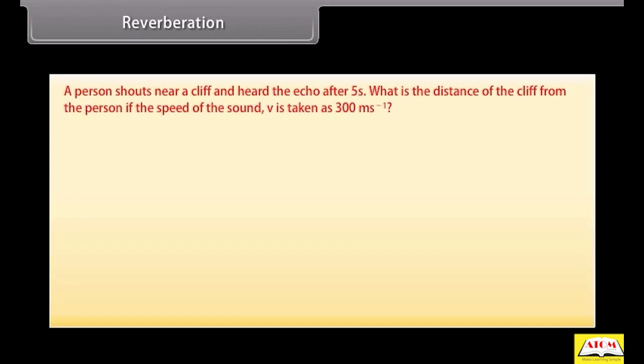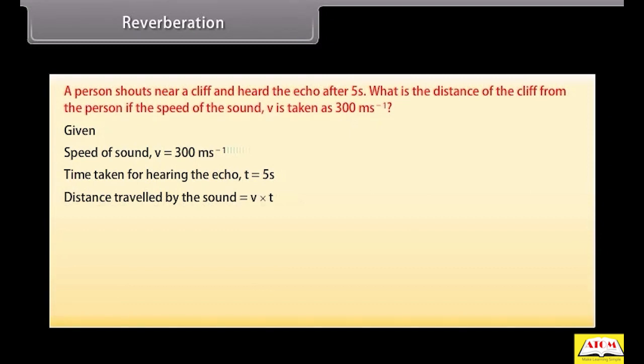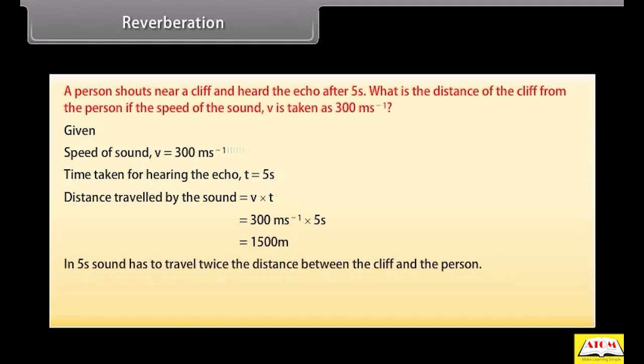Problem: A person shouts near a cliff and hears the echo after five seconds. What is the distance of the cliff from the person if the speed of the sound v is taken as 300 meters per second? Given that the speed of sound v is 300 meters per second and time for hearing the echo T is five seconds. Distance travelled by the sound is equal to v into T, which is equal to 300 meters per second into five seconds, equals 1500 meters. In five seconds, sound has to travel twice the distance between the cliff and the person. Hence, the distance between the cliff and the person is 1500 meters by 2, that is 750 meters.